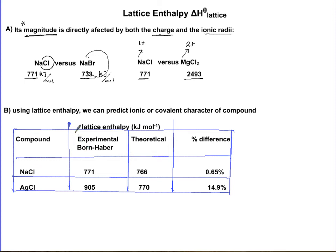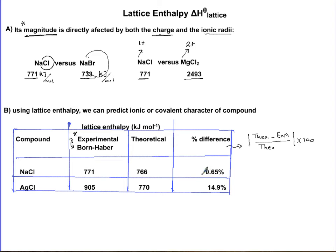One other noteworthy point: you will have a data table with both experimental and theoretical values. If you are calculating using Hess's law via the Born-Haber cycle, you must use the experimental value. In the case of sodium chloride, the theoretical value is 771 and the experimental is 776 kJ/mol. If you calculate the percent error — which is the difference between experimental and theoretical divided by theoretical times 100 — for sodium chloride you get an extremely small difference of 0.65%.